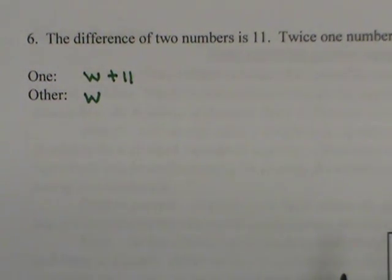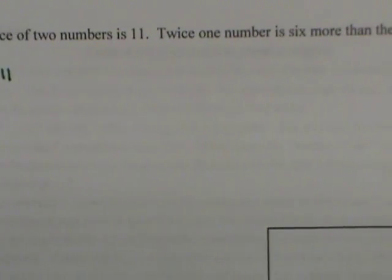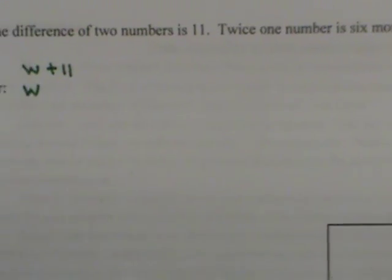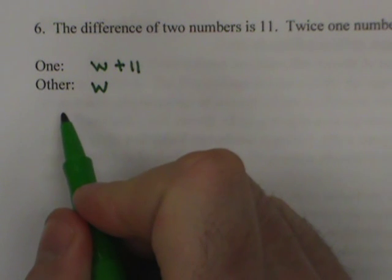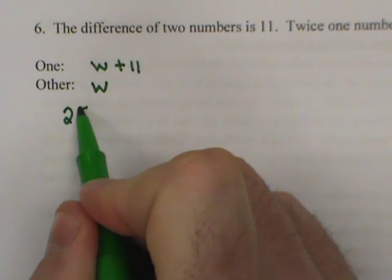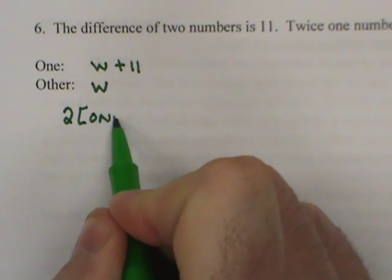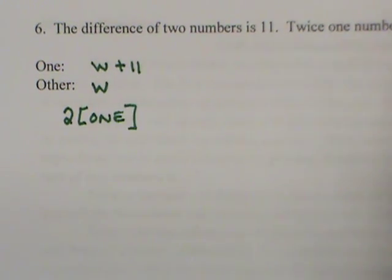I've established my declared variables, so I move on to the equation. It says twice one number. Again, pretty straightforward. We'll go two times one.